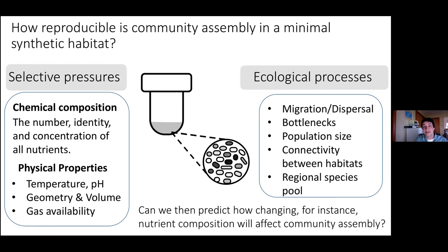The question we're asking is: if we know all of the things that are very difficult to know in natural habitats, can we then understand more mechanistically the origins of these patterns of convergence at the functional level but divergence at the taxonomic level found across many natural habitats? In other words, we're trying to more mechanistically understand the reproducibility of microbial community assembly.